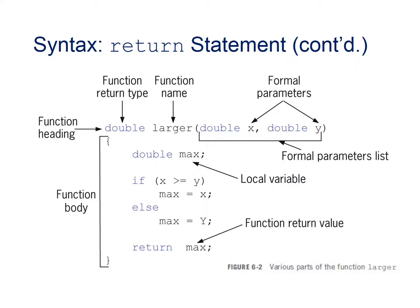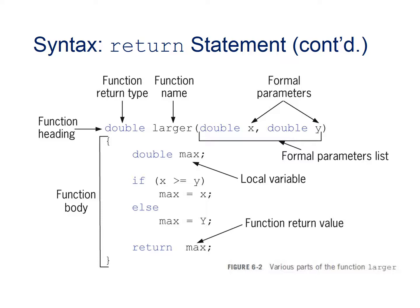Looking at a return statement example: we see two values x and y, both of type double, entering our function. The body of the function performs a logical evaluation of x and y, stores the result into the variable max, and returns the variable max to the calling routine.